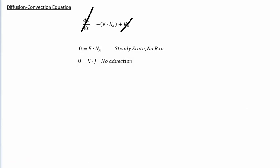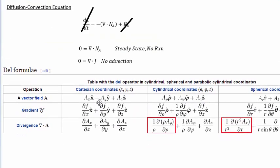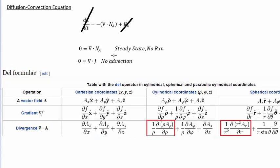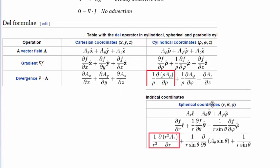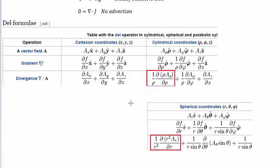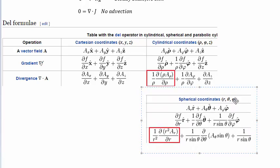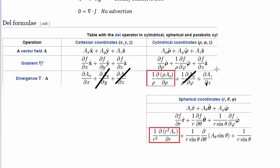You can simply look up the divergence formulas — for example on Wikipedia. For the divergence of J in cylindrical coordinates, you have three coordinate directions: the radius (rho), the angle, and z. For spherical coordinates, you similarly have three: the radius R, the polar angle, and the azimuthal angle. Because we're assuming one-dimensional problems with perfect symmetry, we're only going to consider the R-direction terms — the other terms we simply ignore.